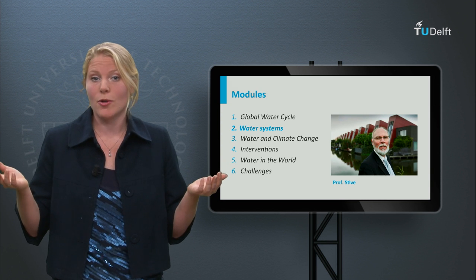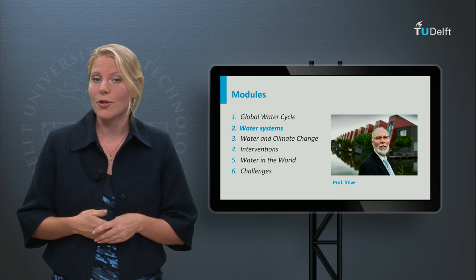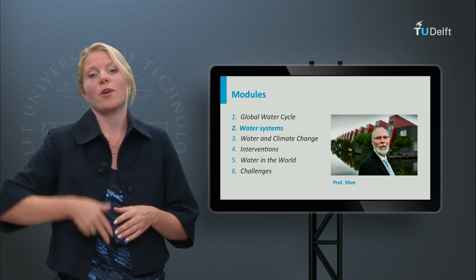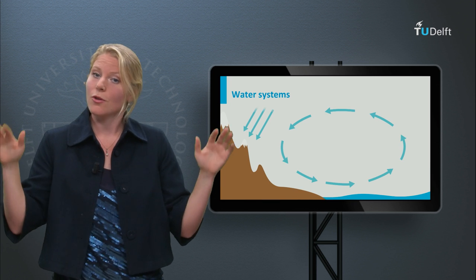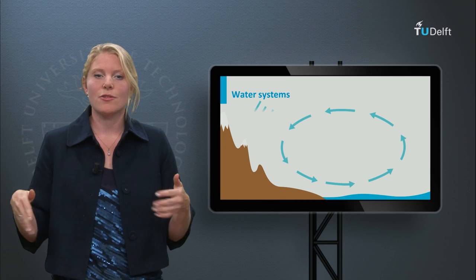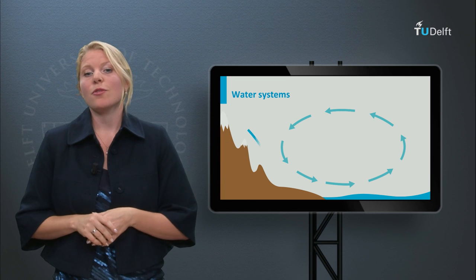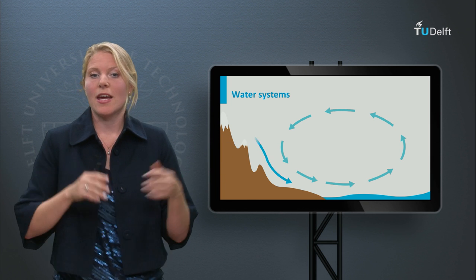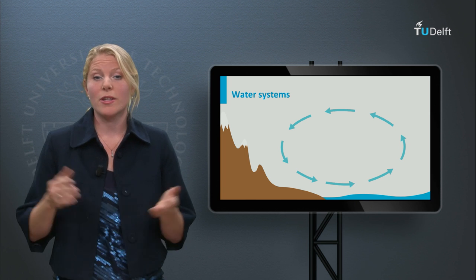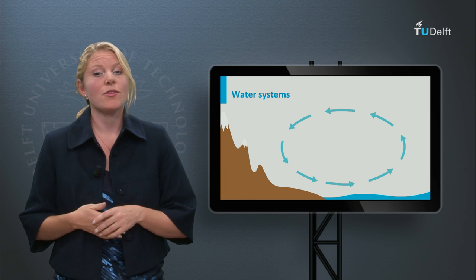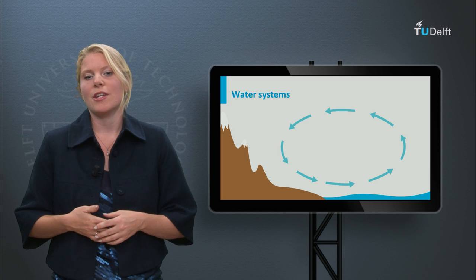These are the basics of the global water cycle, and this week we will focus on the natural behaviour of three water systems. Water resulting from rainfall and snowfall that is not returning to the atmosphere by means of evaporation travels from mountains and elevated areas to the sea or ocean. During this trip, rivers are formed, enabling the transport of water and sediment to the sea.